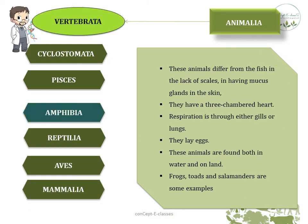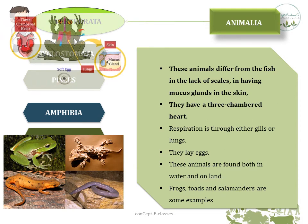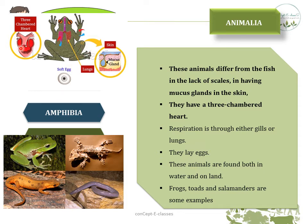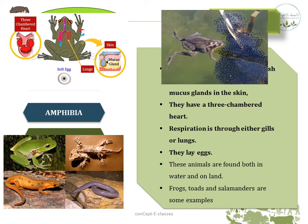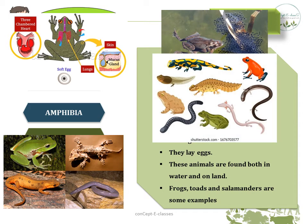The third class under Vertebrata is Amphibia. These animals differ from fish in that they lack scales but have mucus glands in their skin. They have a three-chambered heart — fish had only two chambers. Respiration is through gills or lungs. They lay eggs. These animals are found both in water and on land, which is why they are called Amphibia — meaning 'double life.' Common examples are frogs, toads, and salamanders.